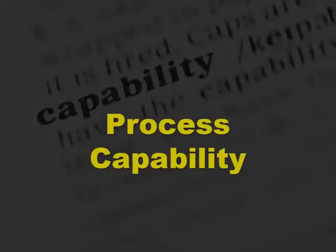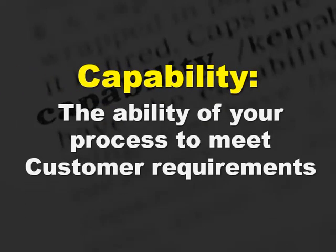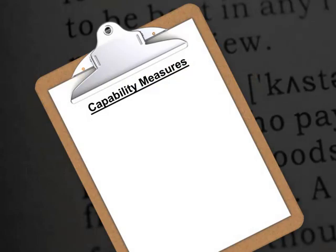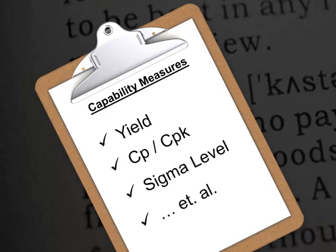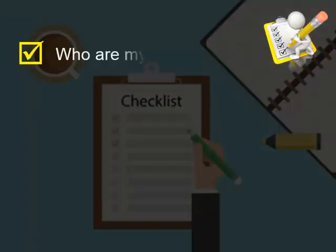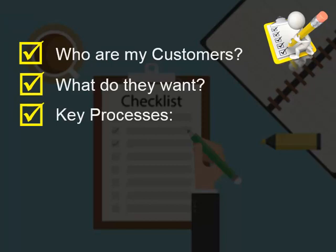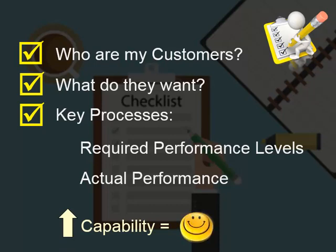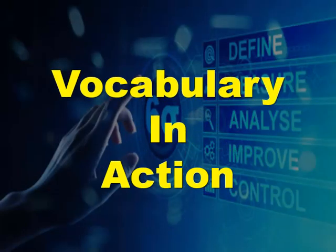Our final term is capability, which quite simply is the ability of a process to meet its customers' requirements. In Lean Six Sigma, we collect data on key process characteristics, and capability is measured several ways through metrics with names like yield, CP and CPK, Sigma levels, and so on. Once you know who your customers are and what they want, you can look at the performance levels of key processes providing that customer output. And capability measures how well you're doing. The more your output is delighting your customers, the happier they are, and the more they repurchase from you and recommend you to others — all of which helps ensure the health of your business.